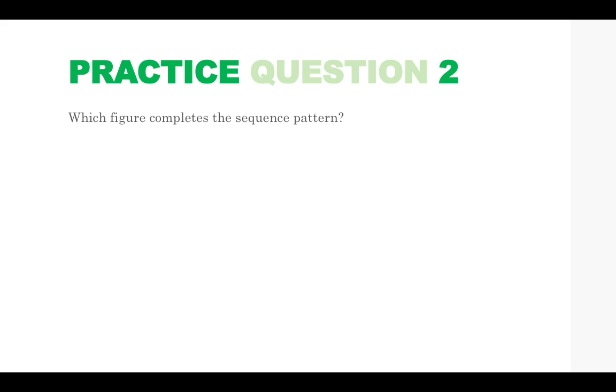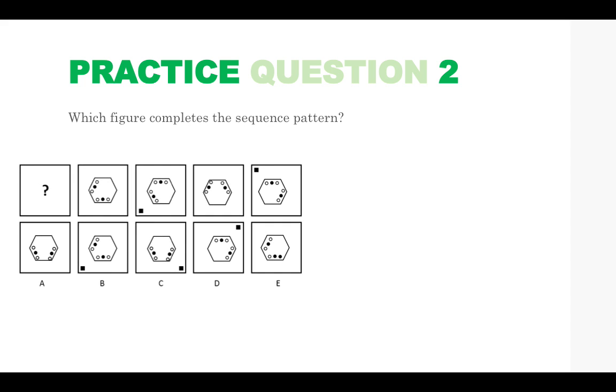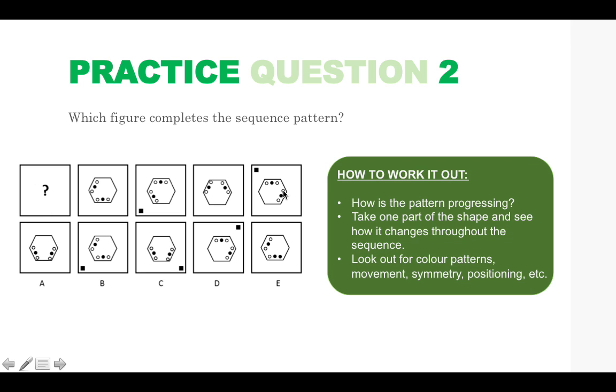Practice question two. Which figure completes the sequence pattern? So you're not finding the next one, you're finding the one that comes first in this sequence. So we can see that we have a hexagon shape with six dots inside which two are black and four are white.